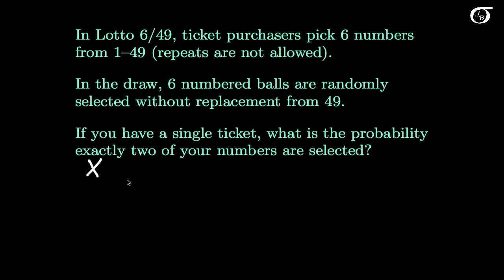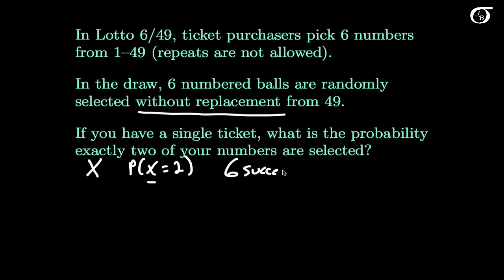If we let the random variable X represent the number of balls that match our chosen numbers, then we're interested in the probability that X is equal to 2. It's going to help if we know the distribution of X. We're picking six random balls and seeing how many match ours. The without replacement aspect is key — if a ball is selected, it's put aside and can't be picked again. So we are picking six things from a population that has six successes (the numbers we chose) and 43 failures (the numbers we didn't choose), without replacement. Our minds should be going towards the hypergeometric distribution.